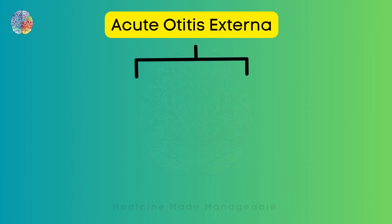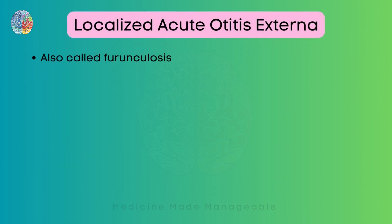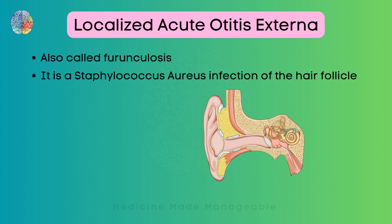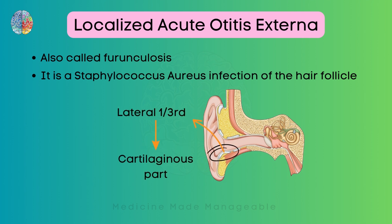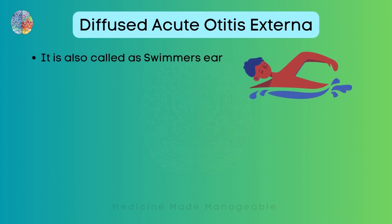AOE can be divided into two types: localized or diffused. Localized AOE is also called furunculosis — it is an infection of the hair follicle caused by Staphylococcus aureus, a gram-positive coccus. The lateral one-third of the EAC is the cartilaginous part and contains hair, so this infection only occurs in the lateral one-third. Diffused AOE is also called swimmer's ear and is a Pseudomonal infection, caused by Pseudomonas — a different bacterium from Staphylococcus aureus.